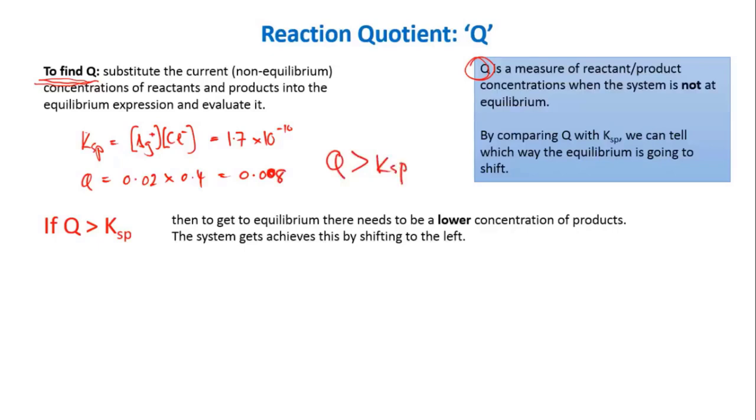What this means is if Q is greater than Ksp, it means that the concentration of our products, the dissolved ions, must be too high. So to get to equilibrium, you need to reduce the amount of products.